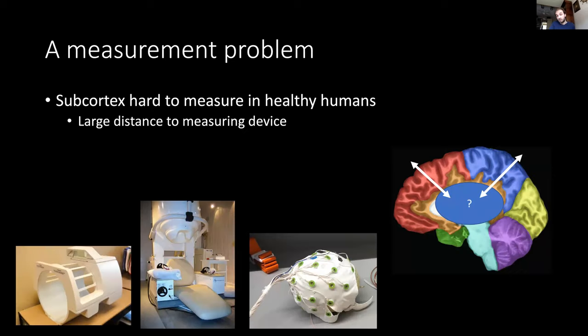One factor contributing here is that it's much more difficult to measure the function of subcortex compared to cortex. If you use healthy human beings as your subjects, then you're bound to using non-invasive methods. If you use non-invasive methods, by definition you're recording from the outside of the skull and subcortex is somewhere roughly in the middle of the skull.